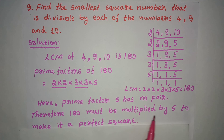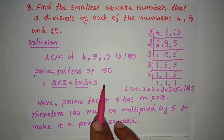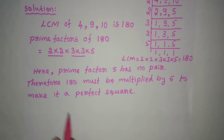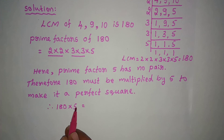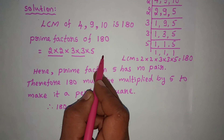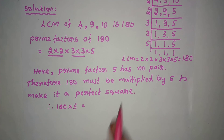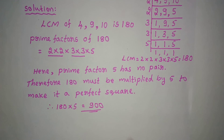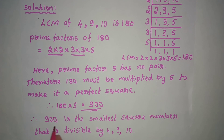Since 5 has no pair, 180 must be multiplied by 5 to make it a perfect square. Therefore 180 into 5 equals 900. Now 5 forms a group, making it a perfect square. Therefore 900 is the smallest square number that is divisible by 4, 9, and 10.